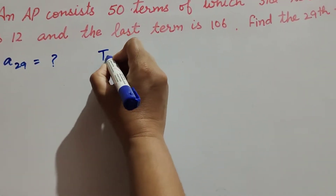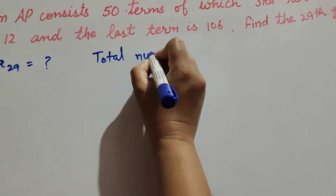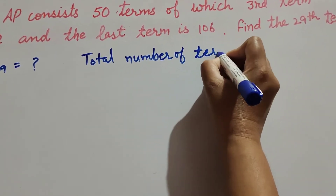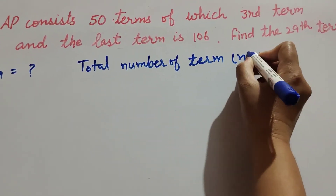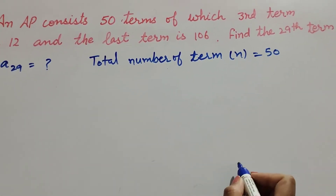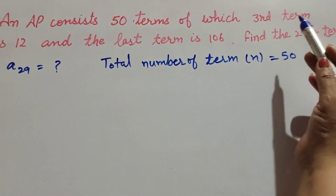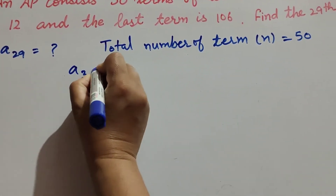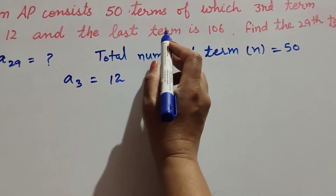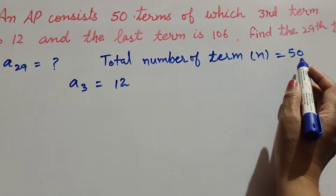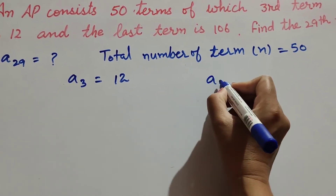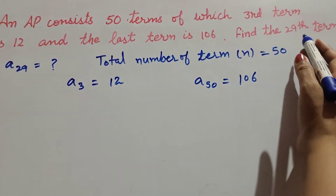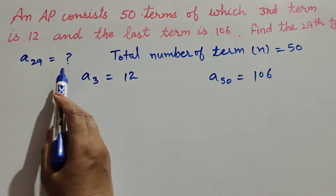The AP consists of 50 terms. So total number of terms N is equal to 50. The third term is 12, so A3 is equal to 12. And the last term is 106. Since total number of terms is 50, the last term is the 50th term: A50 is equal to 106. And we need to find the 29th term of the AP.